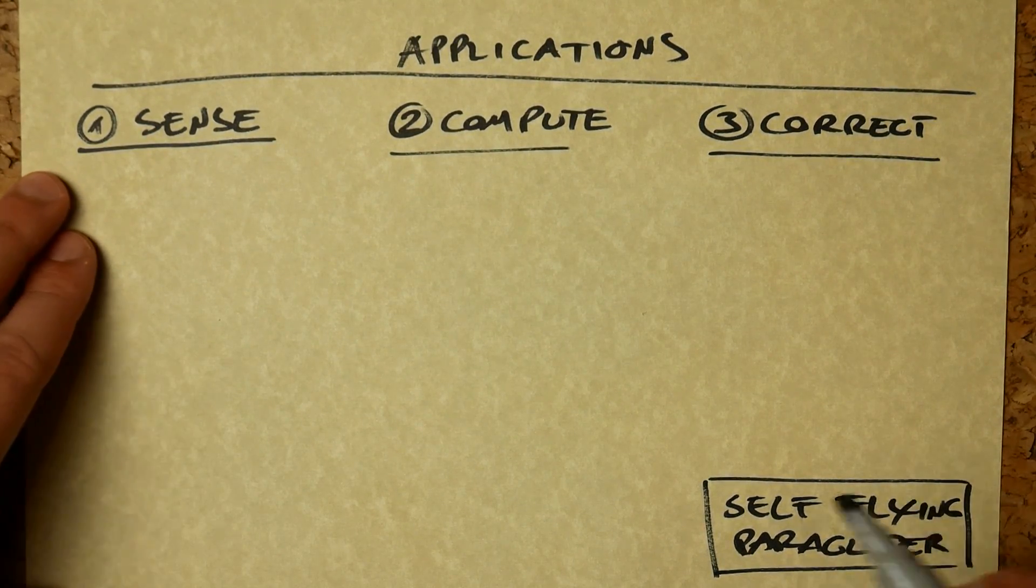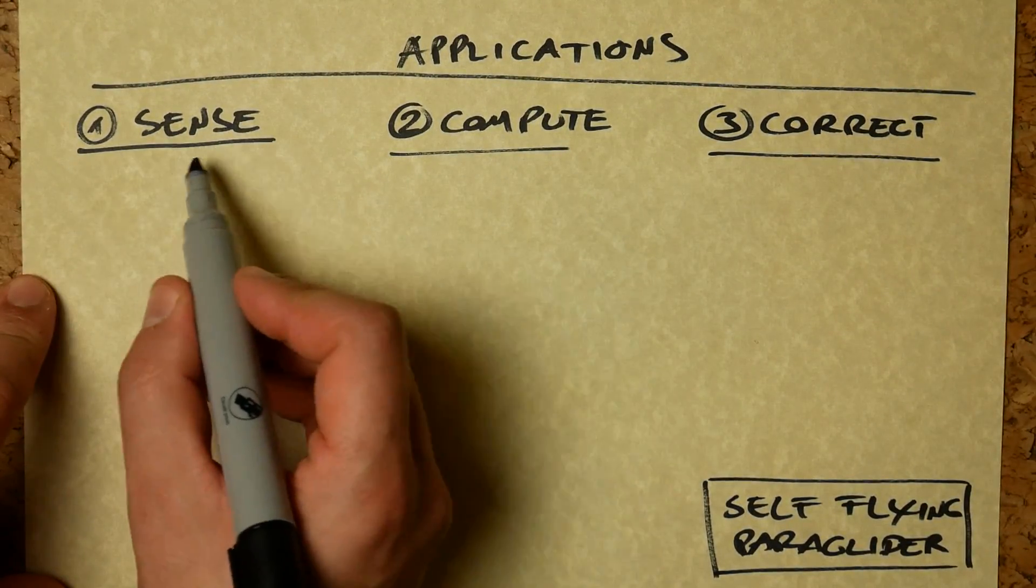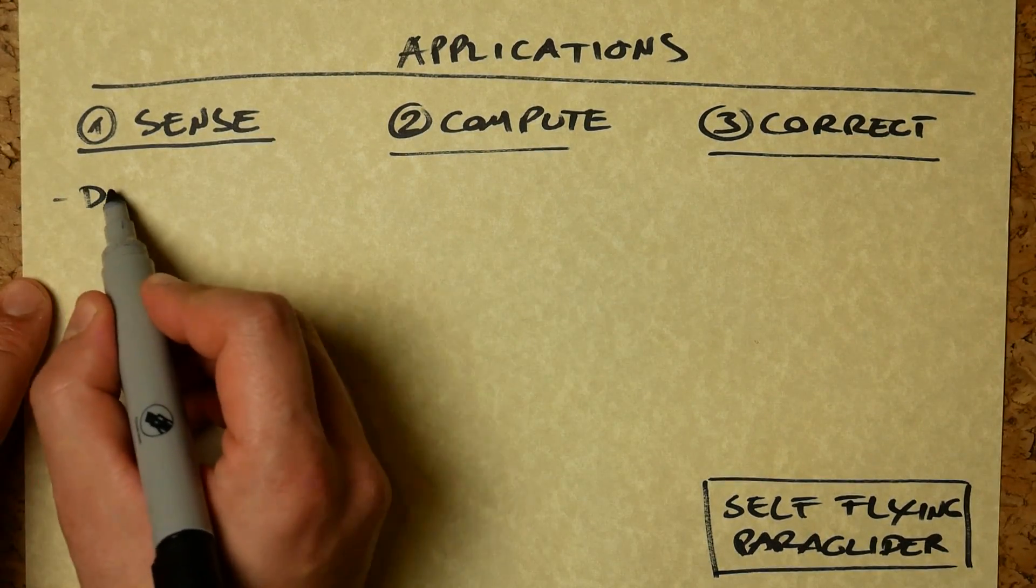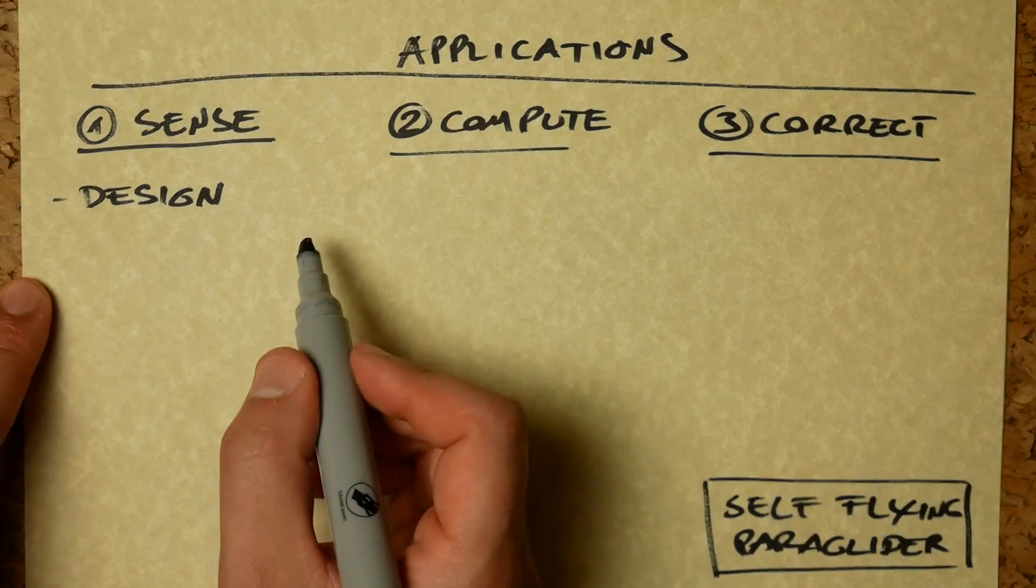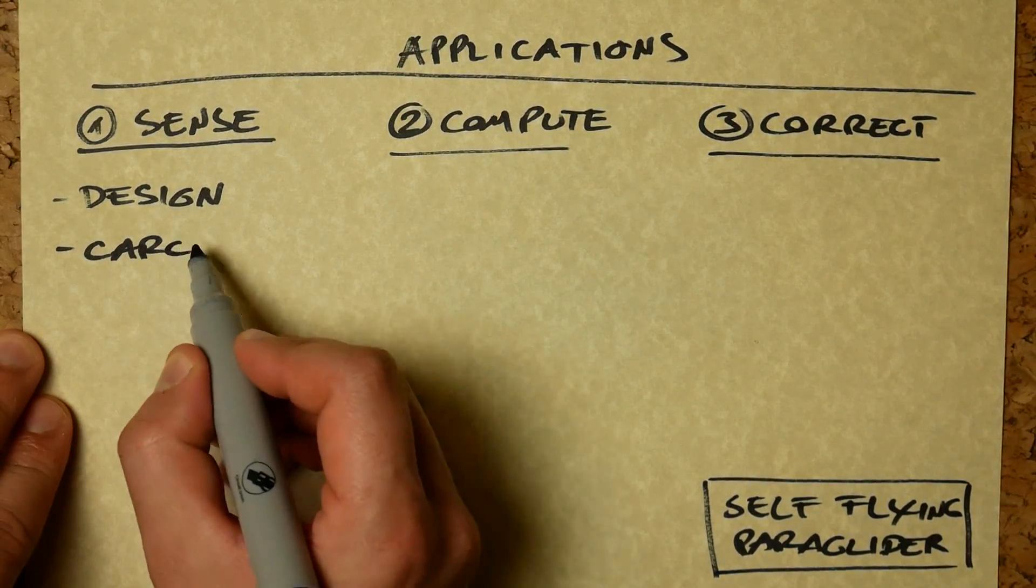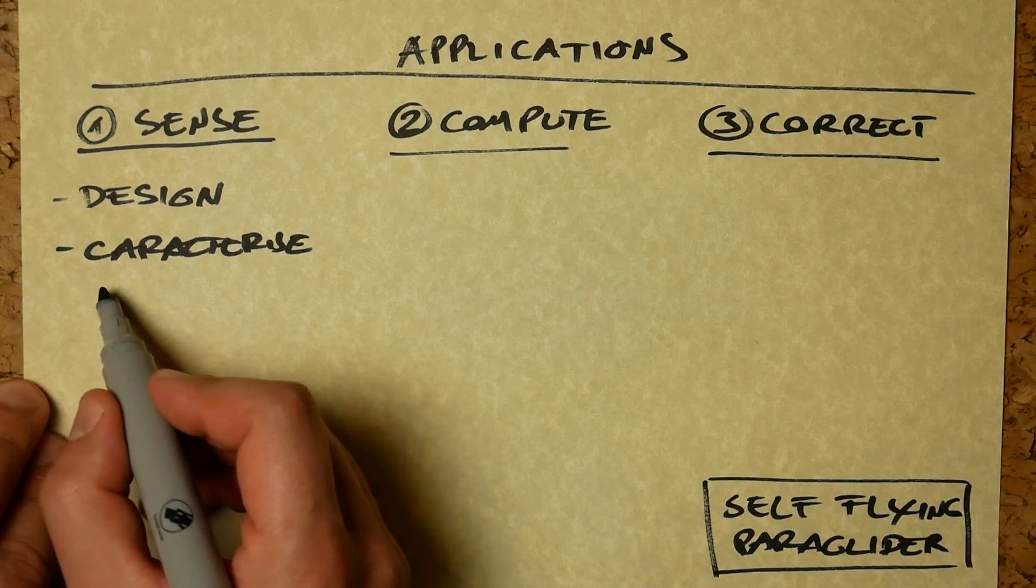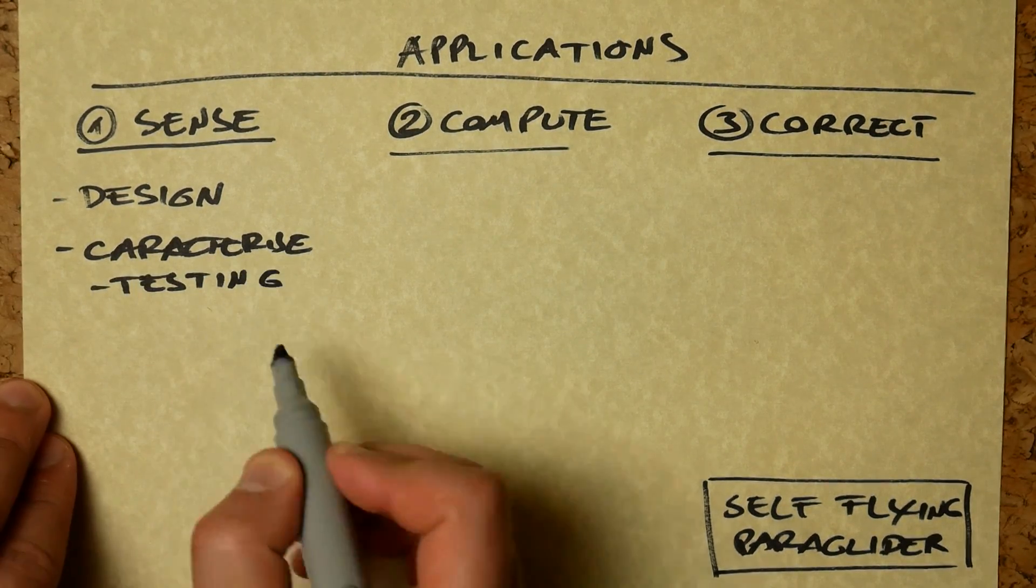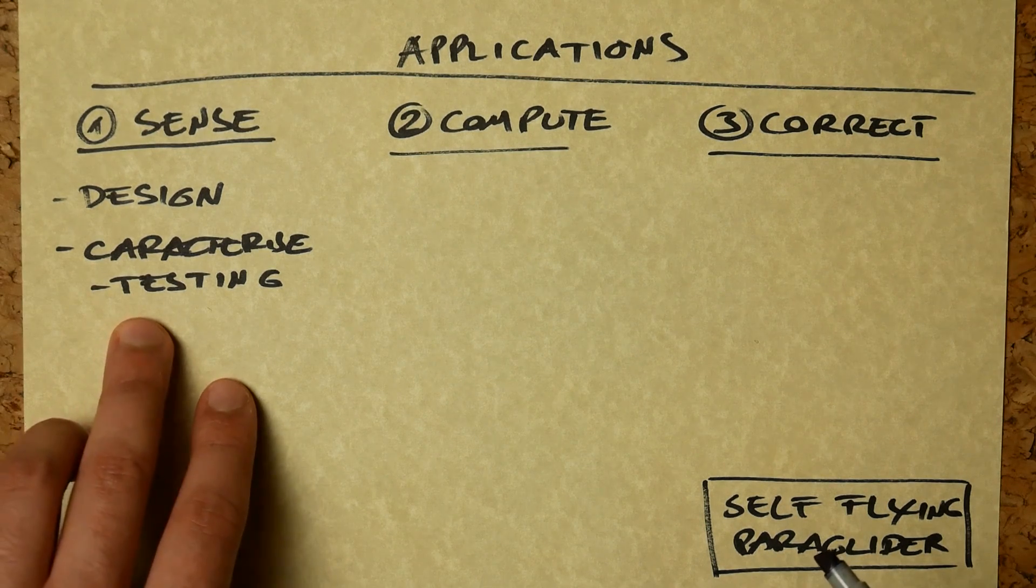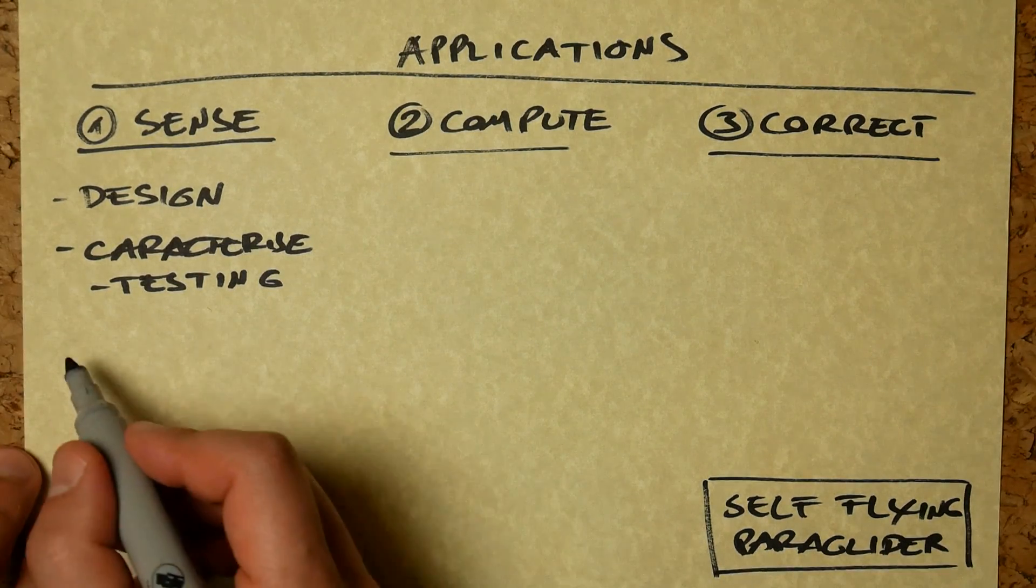So if we start to sense, even if we don't do all of these other things, if we start to be able to measure exactly what's going on in the wing, we can start designing better paragliders because we understand better what is going on. And we can characterize wings better. For instance, we can make EN testing of wings by the way that the lines react to inputs rather than by pilot feel and etc.